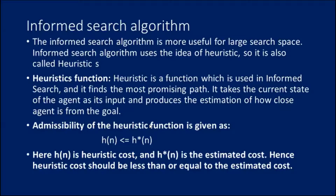Keeping some information about the particular problem and using the idea of heuristic search by applying h(n) ≤ h*(n), where h(n) is the heuristic cost and h*(n) is the estimated cost — the heuristic cost is always less than or equal to the estimated cost. By having this idea, it is going to solve each and every problem using this informed search algorithm. There are two algorithms that fall into this category: the first one is Best First Search algorithm, and the next one is A* search algorithm.